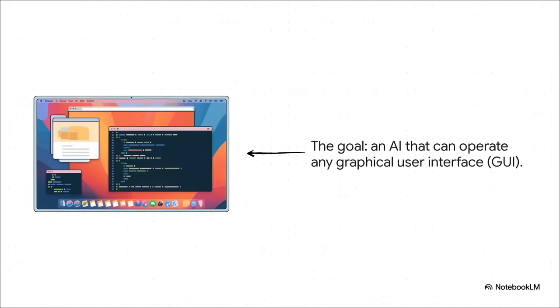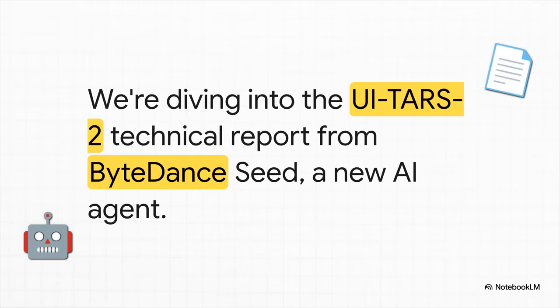So for an AI to be genuinely useful, it has to learn to navigate all of that. It has to master this visual language of icons and buttons and menus, what we call the graphical user interface, or GUI. So how is this actually becoming a reality?